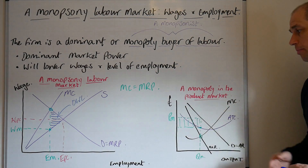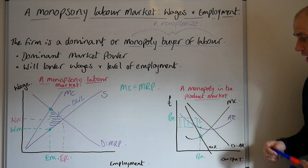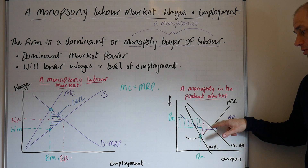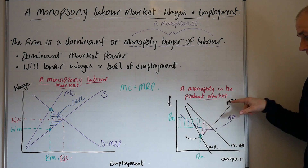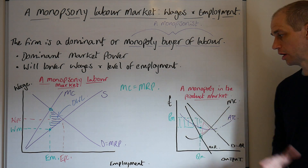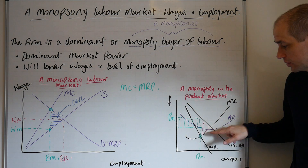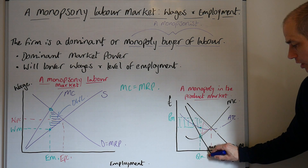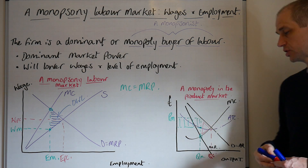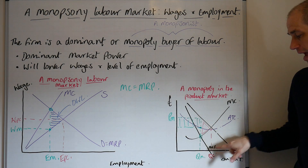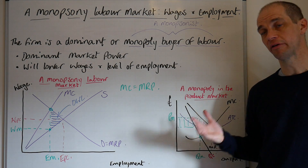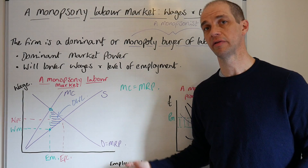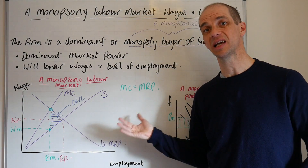Coming back to our monopoly diagram and the product market, we can see there is a deadweight economic loss here between the competitive market outcome — where price equals marginal cost, or supply, equals demand or average revenue — and the monopoly outcome. We can see that the output level in a competitive marketplace would achieve QC. That output differential — the fact that output is much lower in a monopoly than in a perfectly competitive market — is likely to directly correspond with the level of employment. Here we've got less employment, so you'd expect less output generally.